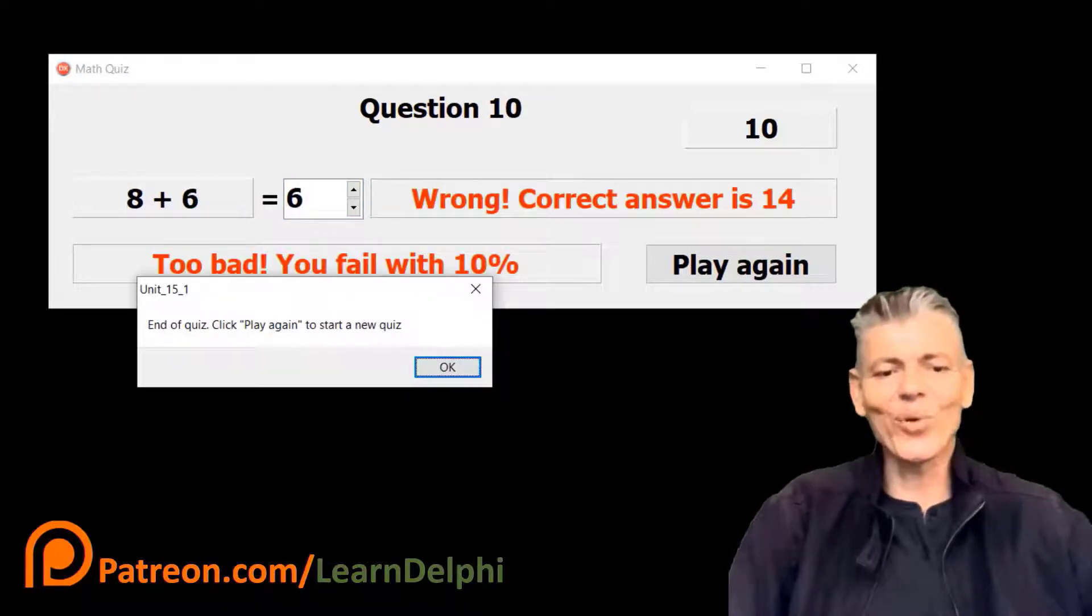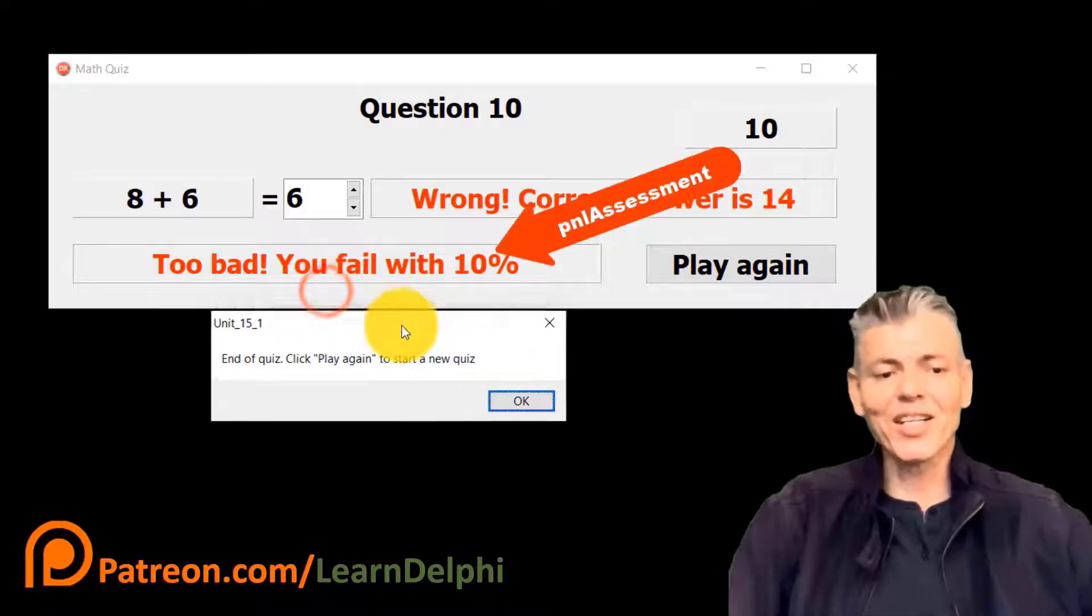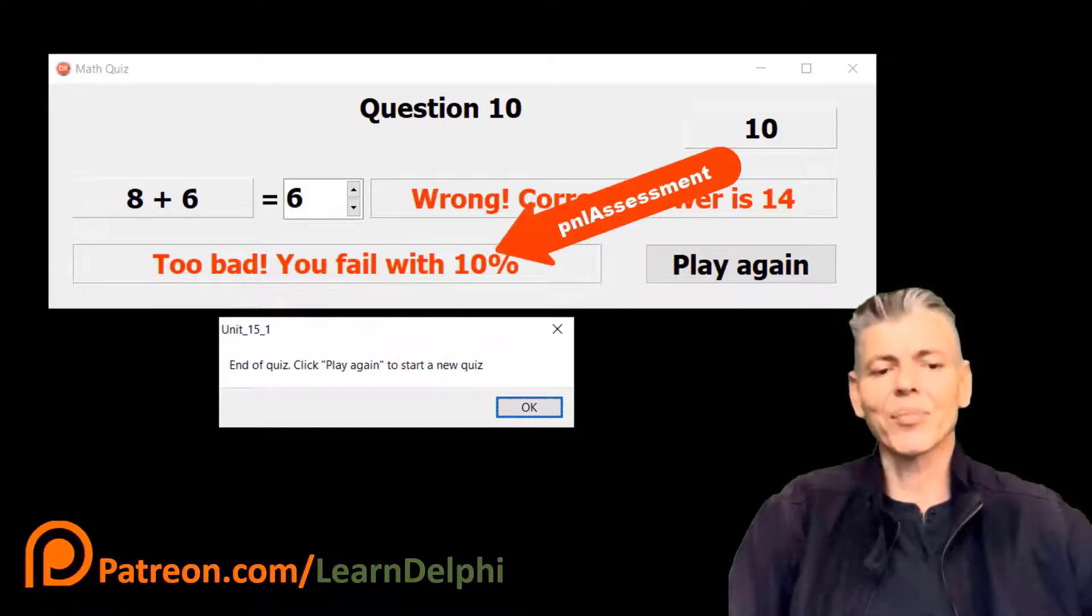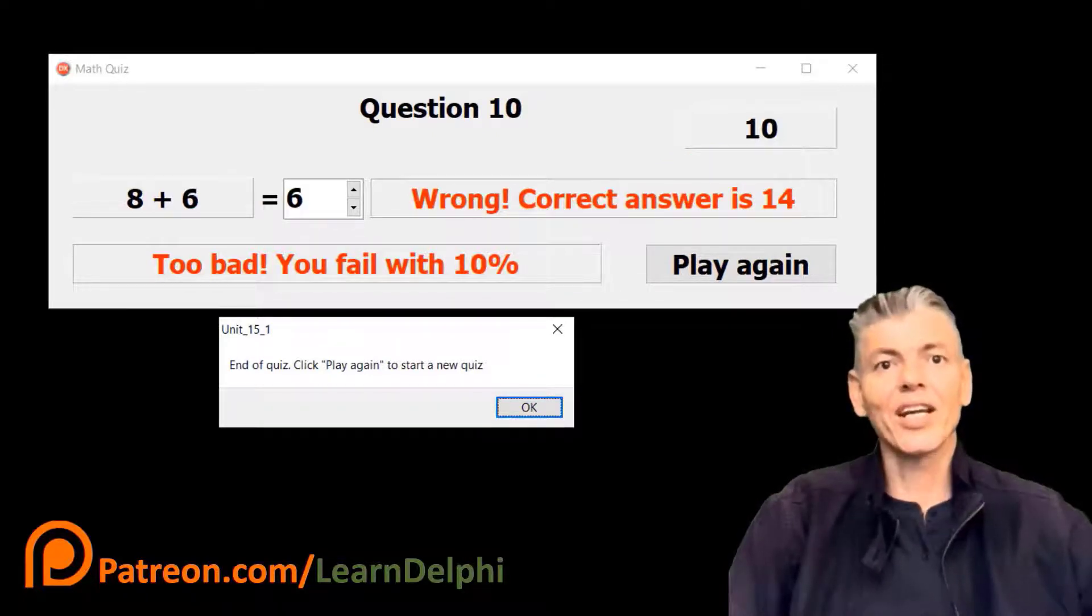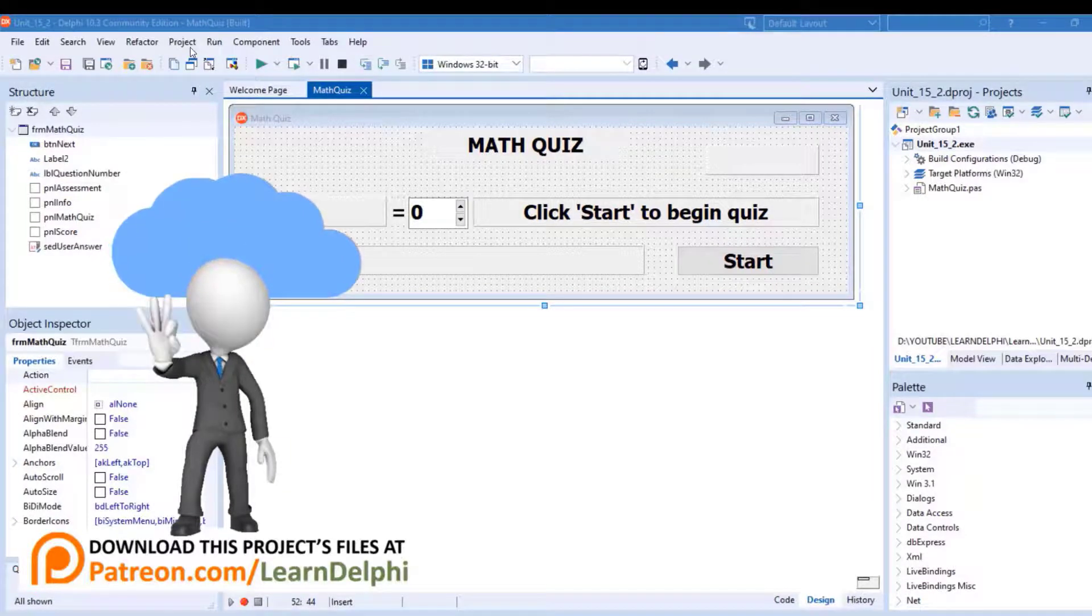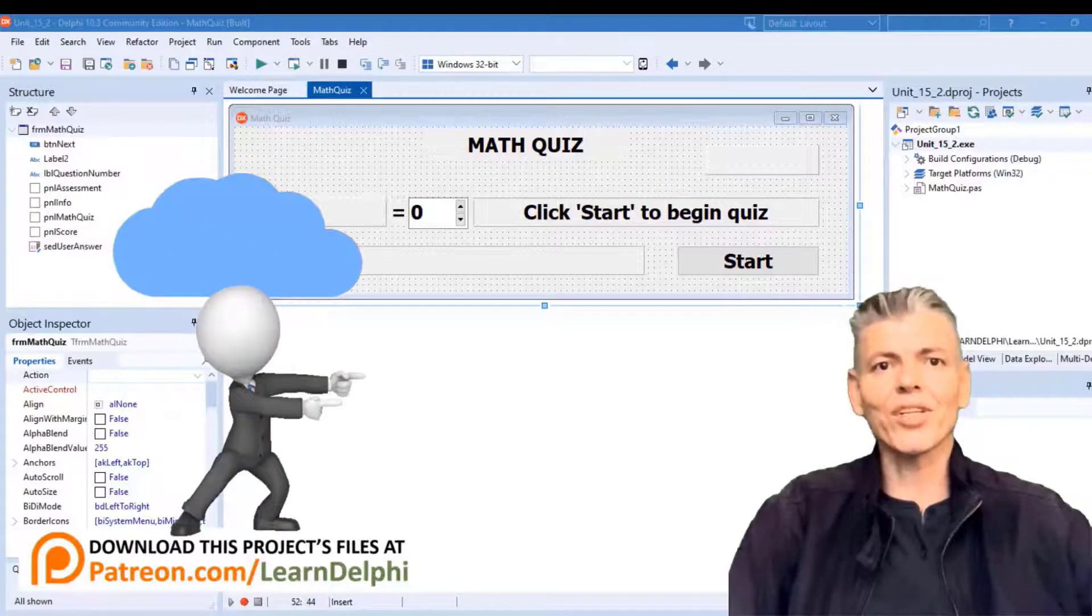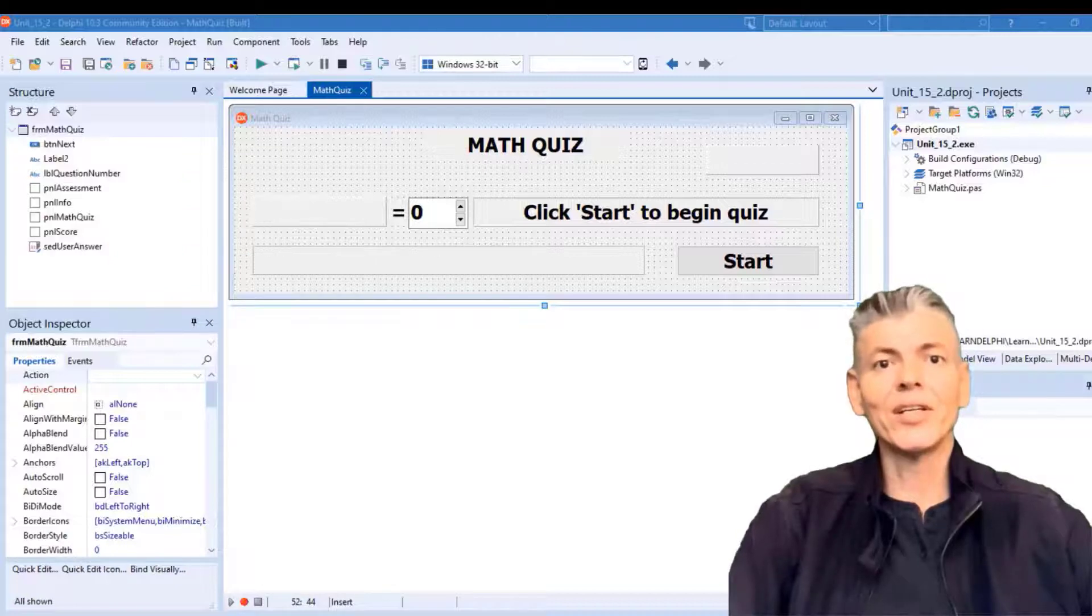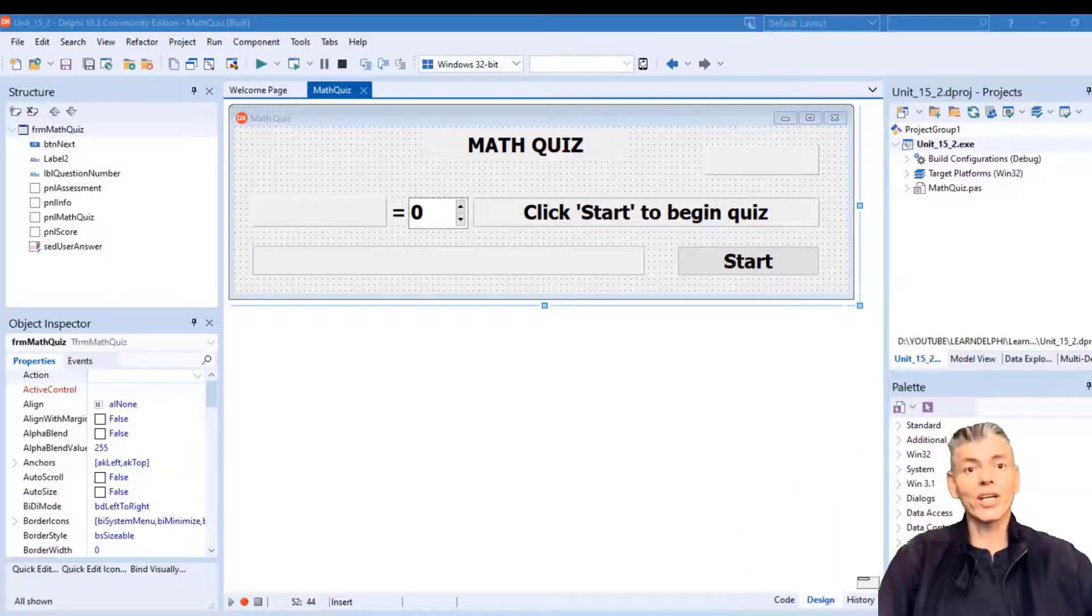If you answered another 10 questions and your score is below 70%, the message box pops up again. This panel displays again and shows that you failed because your score was too low. So if you want to start with me, pause the video here and go download the starter project files from patreon.com/learndelphi. If you downloaded the starter project files, open it in Delphi. Now follow what I'm doing and write the code with me.